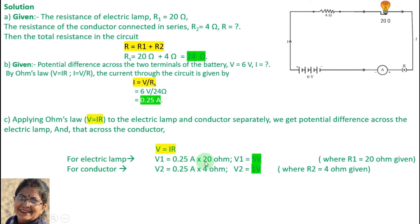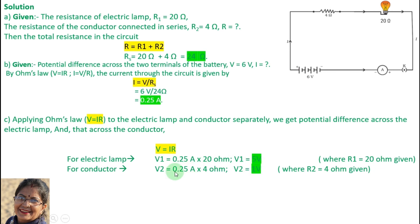For the electric bulb, the resistance is 20 ohms. So V1 equals 0.25 ampere multiplied by 20 ohms, which gives 5 volts. For V2, the conductor has R equal to 4 ohms. The current is the same throughout — in a series circuit, the current is the same everywhere. So V2 equals 0.25 multiplied by 4 ohms. The values of V1 and V2 are our final answers.